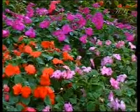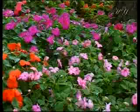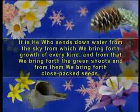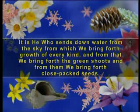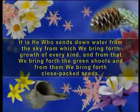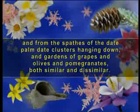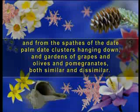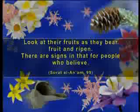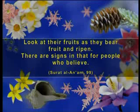The flawless creation of plants has been revealed in a verse from the Quran, and we are told that this is also important proof for believers: 'It is He who sends down water from the sky, from which we bring forth growth of every kind, and from that we bring forth the green shoots, and from them we bring forth close-packed seeds, and from the spathes of the date palm date clusters hanging down, and gardens of grapes and olives and pomegranates both similar and dissimilar. Look at their fruits as they bear fruit and ripen. There are signs in that for people who believe.'